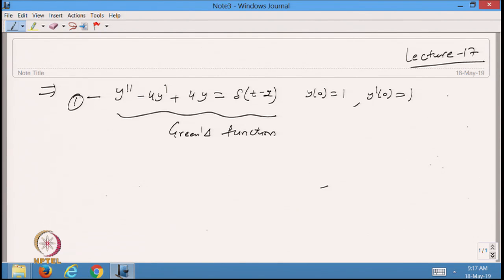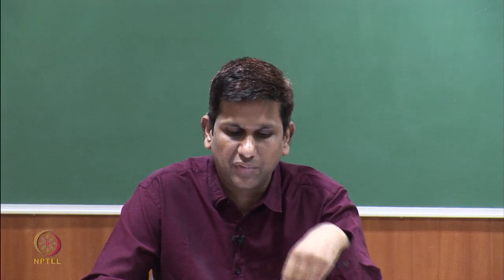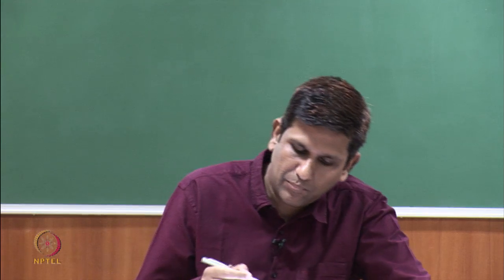This is equation number 1 and this is my initial value problem. If you remember, if I want to apply previous methods to solve the second order differential equation, I am unable to find the particular solution whenever the right hand side function is a Dirac delta function. So this is the benefit of dealing with the Laplace transformation, because we already know the Laplace transformation of the Dirac delta function.